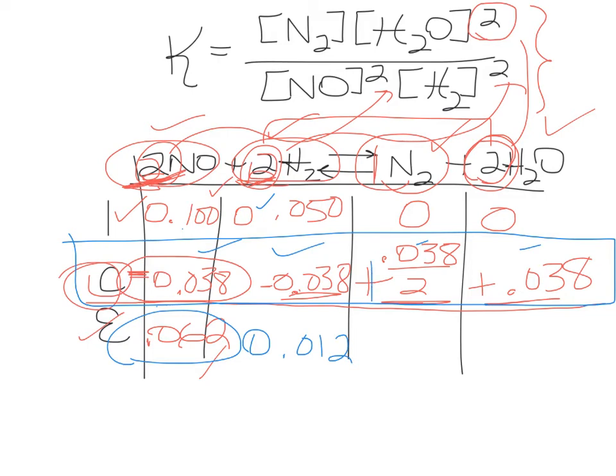Now remember you're adding on the product side. Okay. So let's see. 0.038 divided by 2 is 0.019. And 0 plus 0.038 is 0.038. All righty, so now we have the equilibrium values for all of the reactants and products. So we're going to take these values, go back up to the expression for K and plug them in.